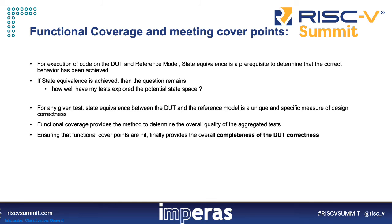To recap: we have an environment where we can execute code on the DUT and the reference model and ensure state equivalence — a prerequisite for confirming correct behavior. If state equivalence is achieved, the remaining question is how well the tests have explored the potential state space and pushed the design into corners. For any given test, state equivalence is a single data point — a measure of correctness but not of coverage. Using functional coverage with cover points gives us the ability to determine the overall quality of all tests when aggregated together, providing the final measure of overall DUT correctness completeness.